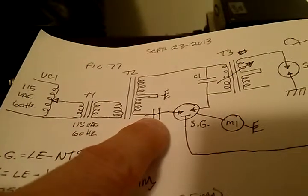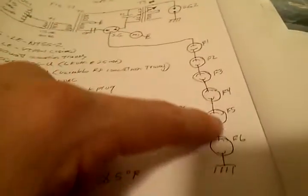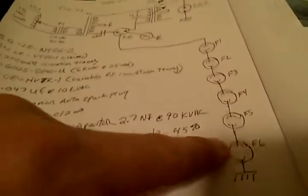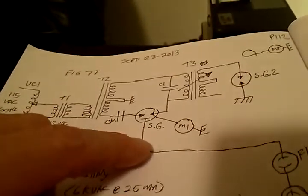Impedance matching capacitor over here. Spark gap here. And the spark gap is firing up six fluorescent tubes in series. There's no capacitor here like the last circuit that was running DC.